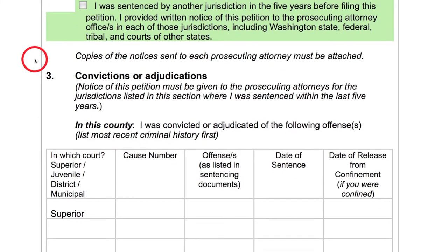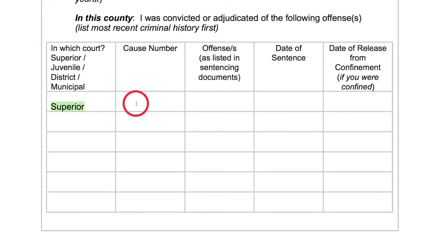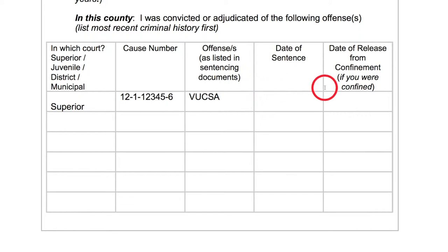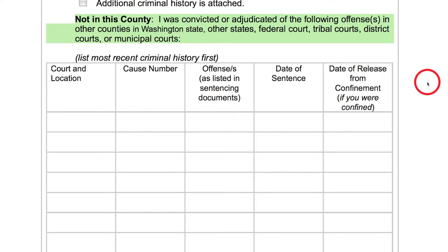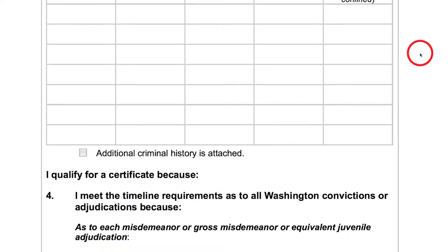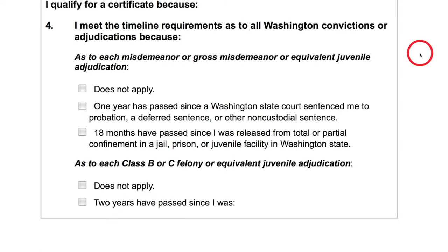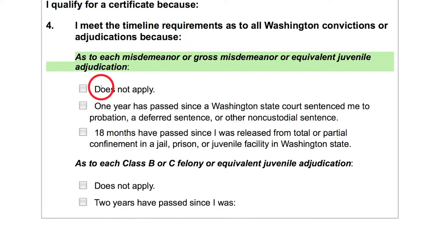In section number three, you'll need to fill out the table with details on every conviction you have in the county where you're filing. You'll find this information on your state patrol background check. If you need more space, write additional convictions on a blank sheet and attach it to the back. On the next page, there's a table for convictions in other counties — fill it out the same way with your most recent conviction first. Section four helps you go through all of the eligibility criteria for the certificate. The first part asks about misdemeanors. If you're not including any misdemeanors on your application, check does not apply.